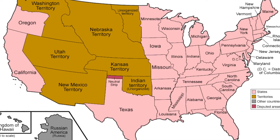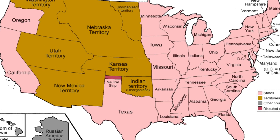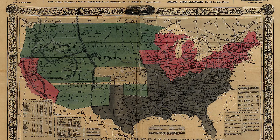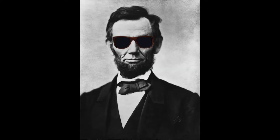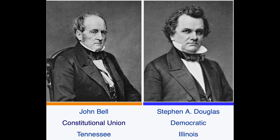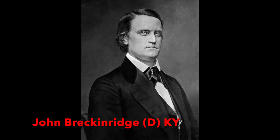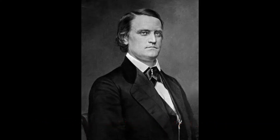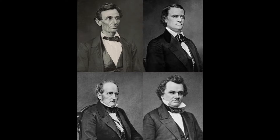It's November 6th, 1860. The U.S. is having an election. The South and the Democratic Party really don't want this guy named Abraham Lincoln to win. So, between the two groups, they decide to run three opposition candidates, which surely wouldn't split the vote and backfire. Right?